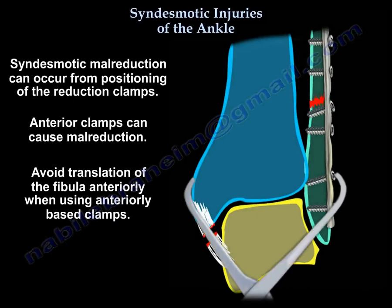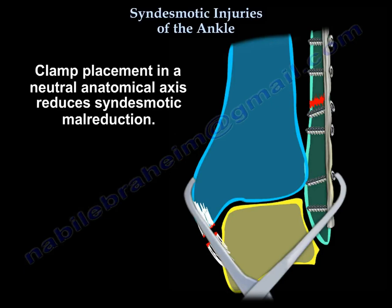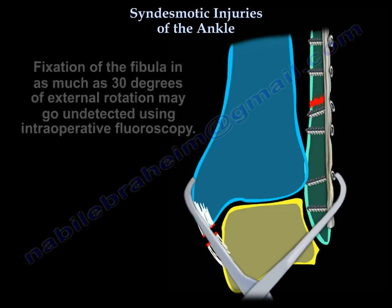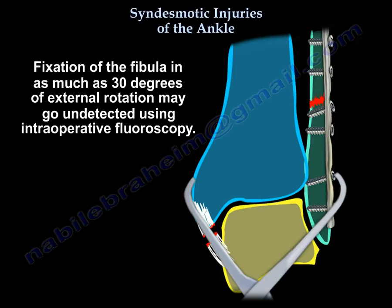Syndesmotic mal-reduction can occur from positioning of the reduction clamps — anterior clamps can cause mal-reduction. Avoid translation of the fibula anteriorly when using anteriorly-based clamps. Clamp placement in a neutral anatomical axis reduces syndesmotic mal-reduction, while obliquely placed clamps result in syndesmotic mal-reduction. Variation in the angulation of the reduction clamp and screw placement can cause iatrogenic syndesmotic mal-reduction and displaces the fibula in external rotation. Fixation of the fibula in as much as 30 degrees of external rotation may go undetected using intraoperative fluoroscopy.